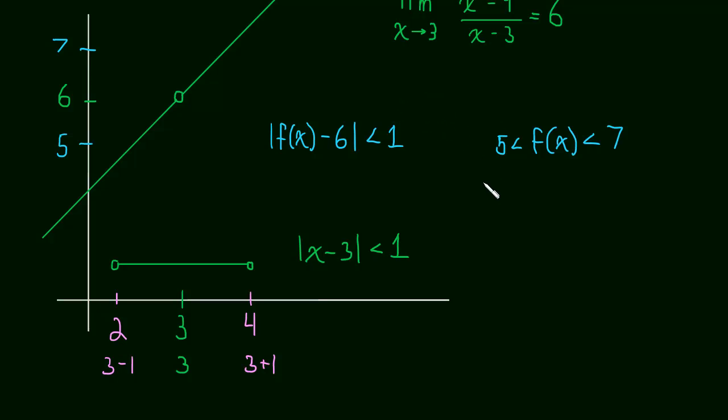So the whole point of this video was to get you comfortable in seeing both these absolute values and realizing that all you're saying is that here f of x is within 1 unit of 6. Here x is within 1 unit of 3. So next we'll look at the actual definition, the epsilon-delta definition of a limit. And this notation will become important for that. See you then.